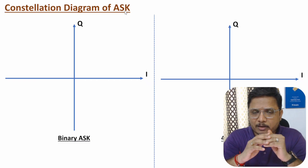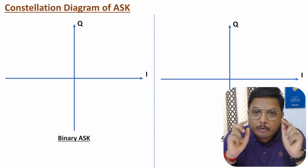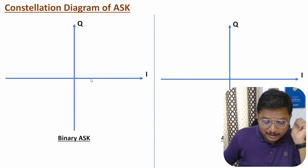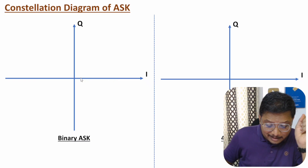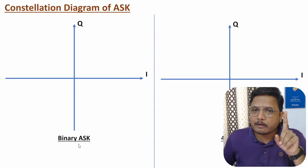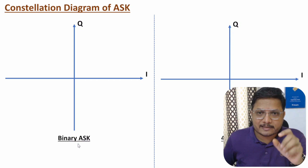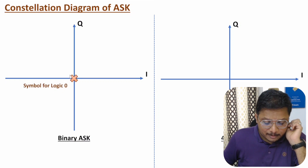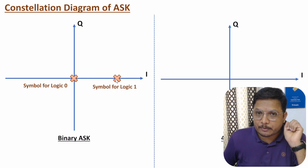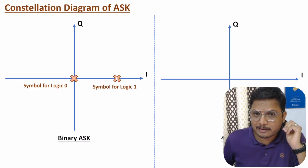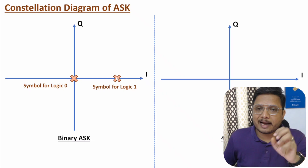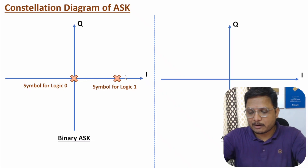Now let me explain the constellation diagram of ASK. In a constellation diagram, symbols are represented with respect to amplitude and phase - distance from center indicates amplitude, and angle with respect to the horizontal axis indicates phase. In binary ASK, we have two symbols: logic 0 has zero amplitude and zero phase, so it is at the center. Logic 1 has some amplitude and zero phase, so it appears on the horizontal axis at some distance from center.